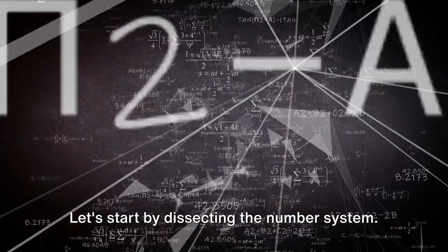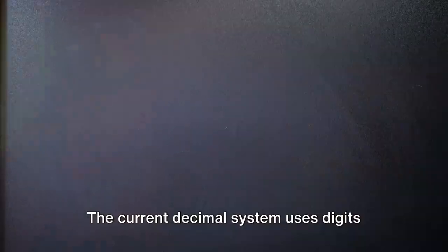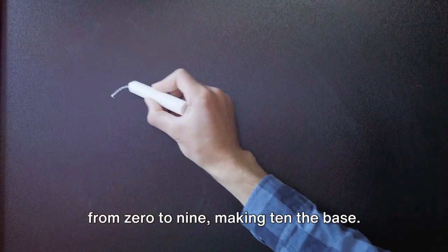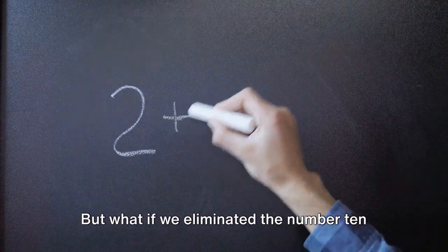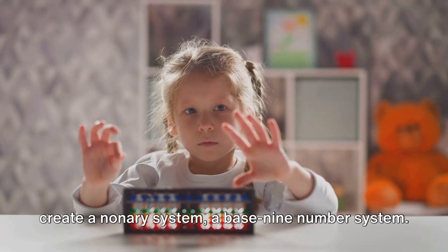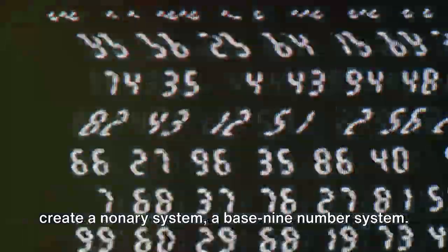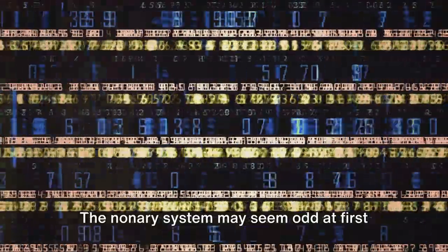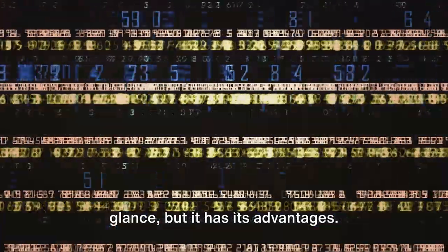Let's start by dissecting the number system. The current decimal system uses digits from 0 to 9, making 10 the base. But what if we eliminated the number 10 and just stopped at 9? That would create a nonary system, a base 9 number system. The nonary system may seem odd at first glance, but it has its advantages.